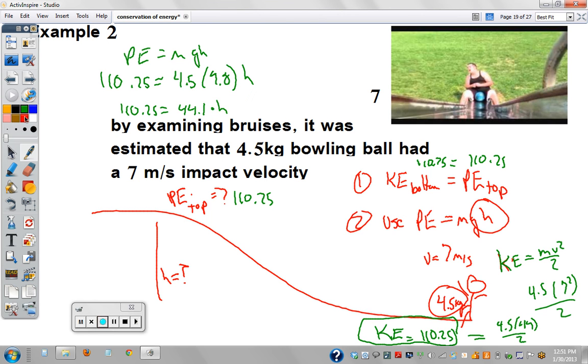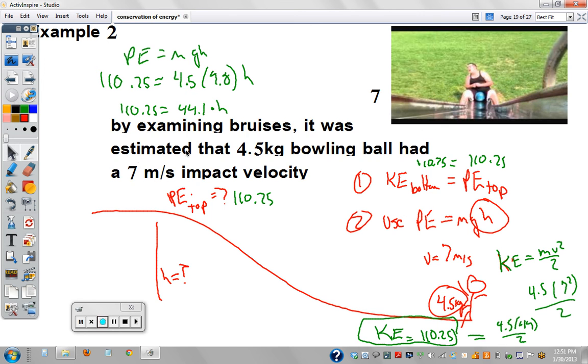The final step is to divide 44.1 on both sides. And you get about 2.5 meters.